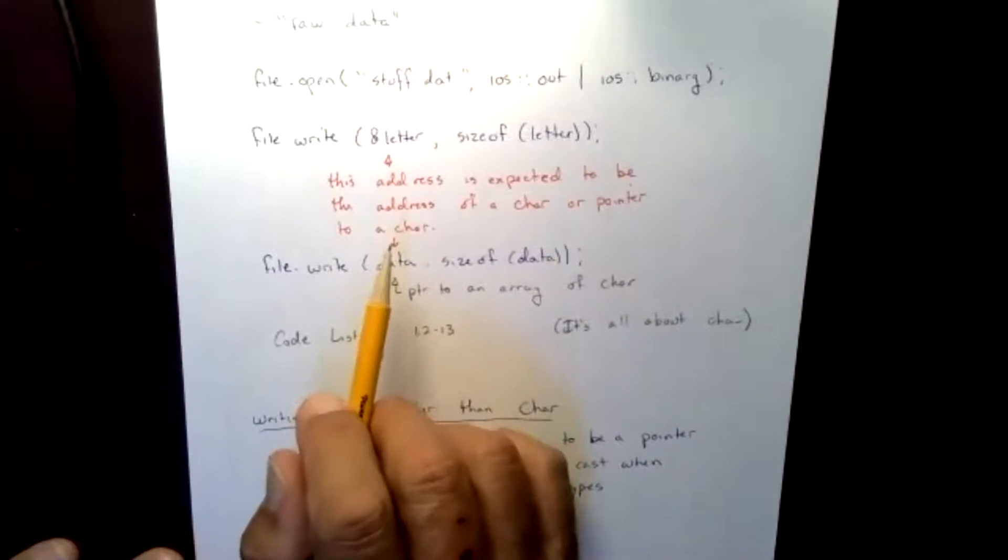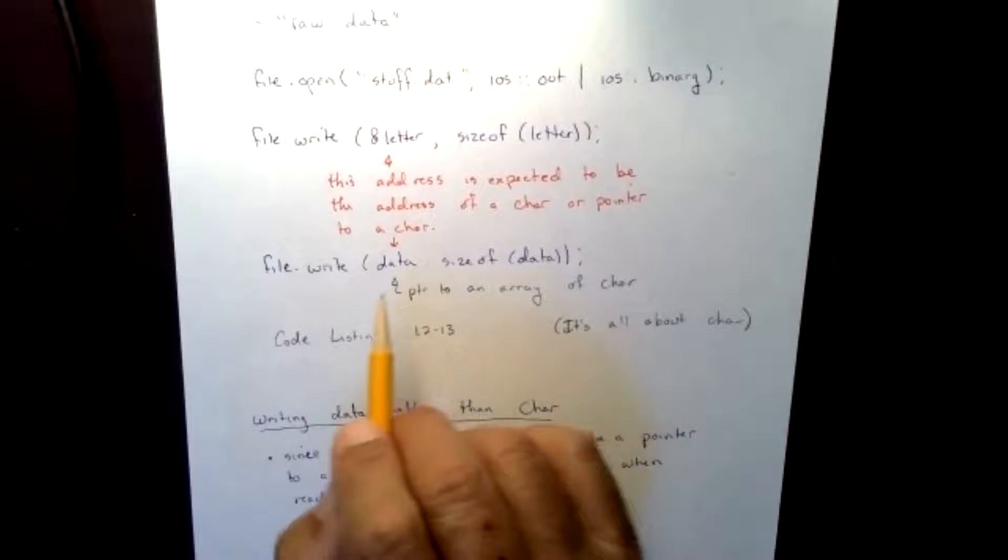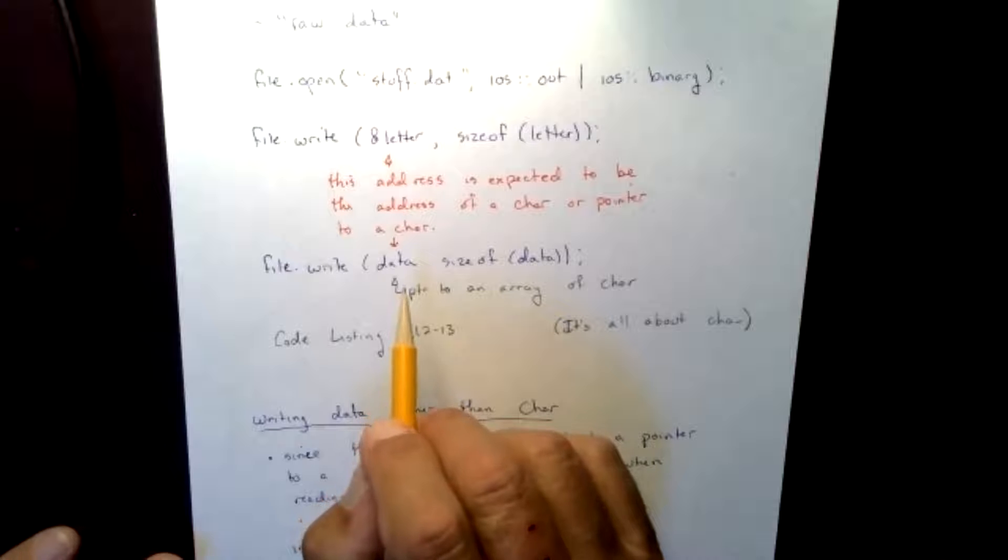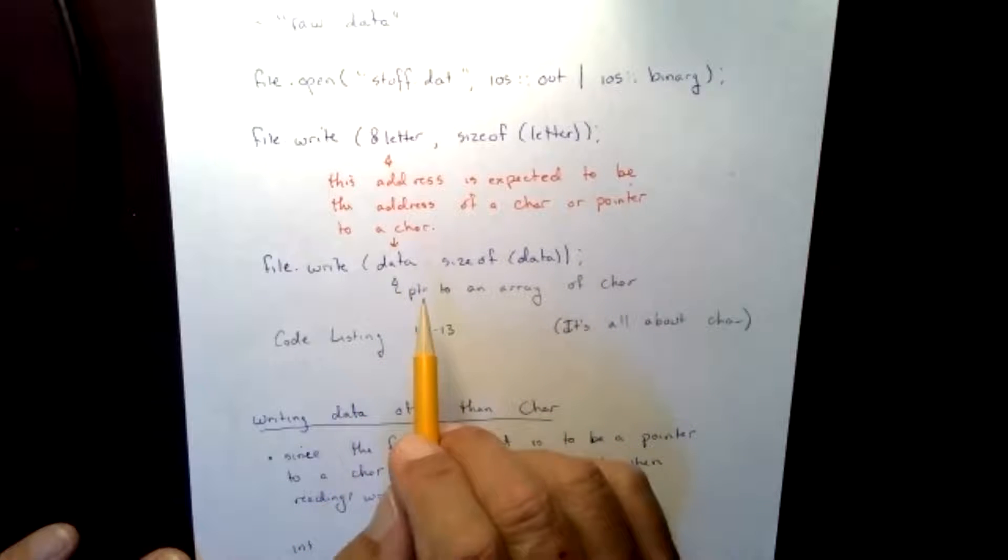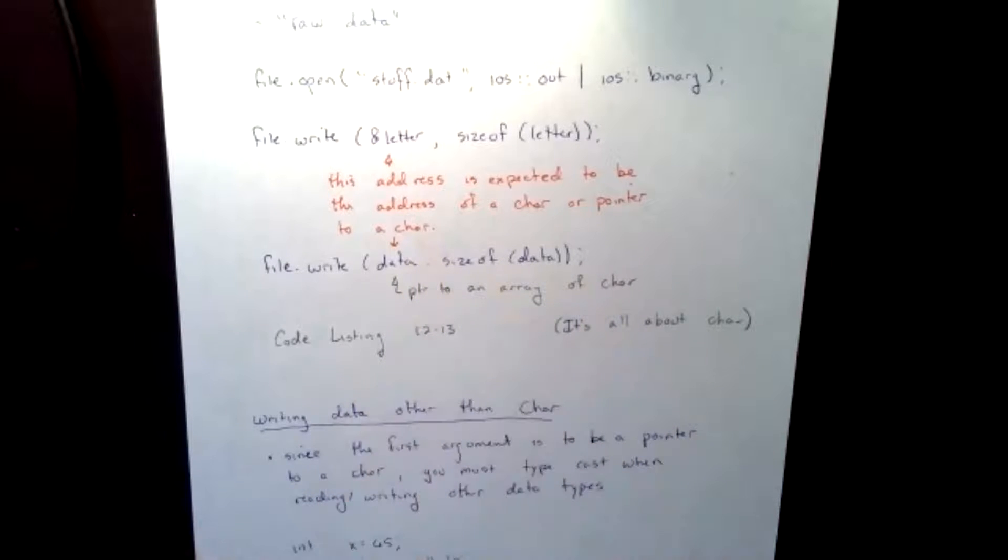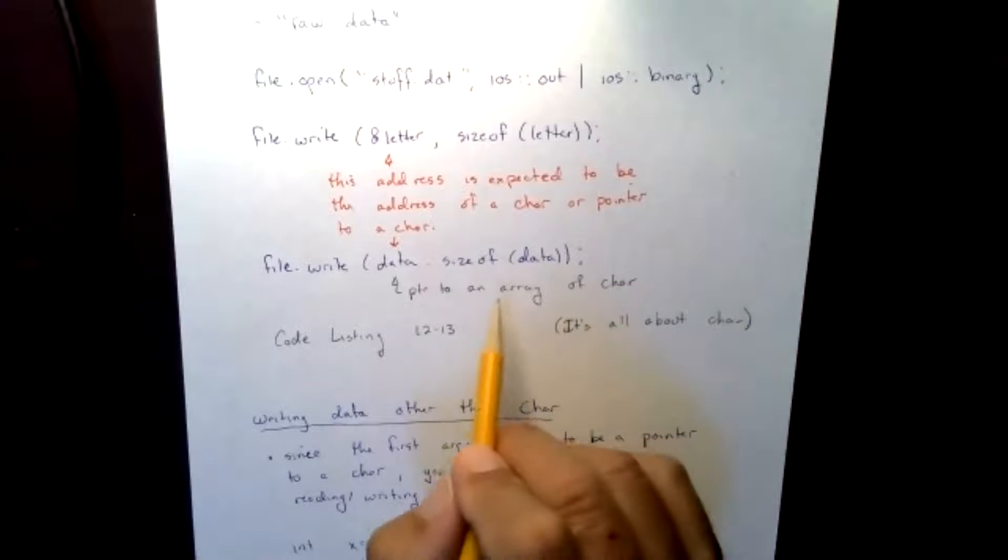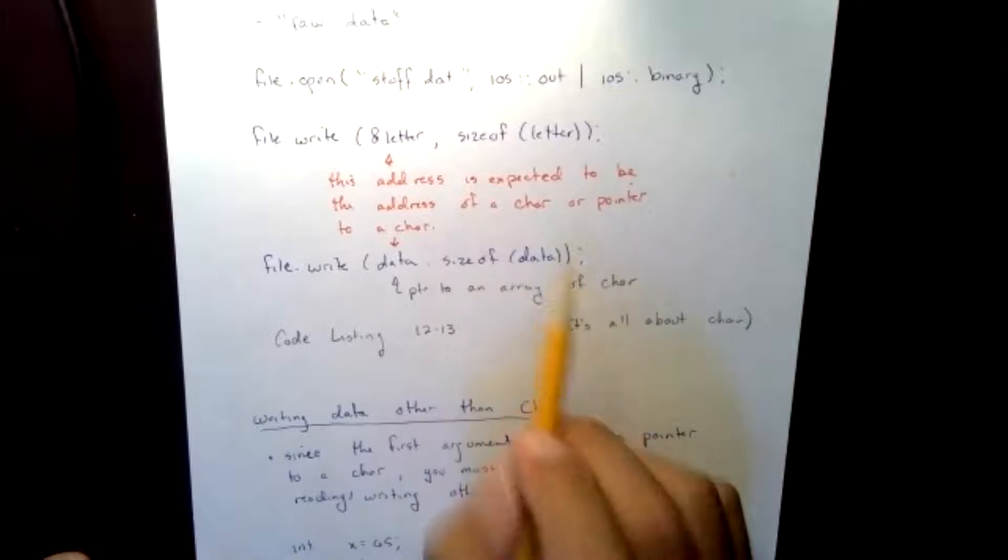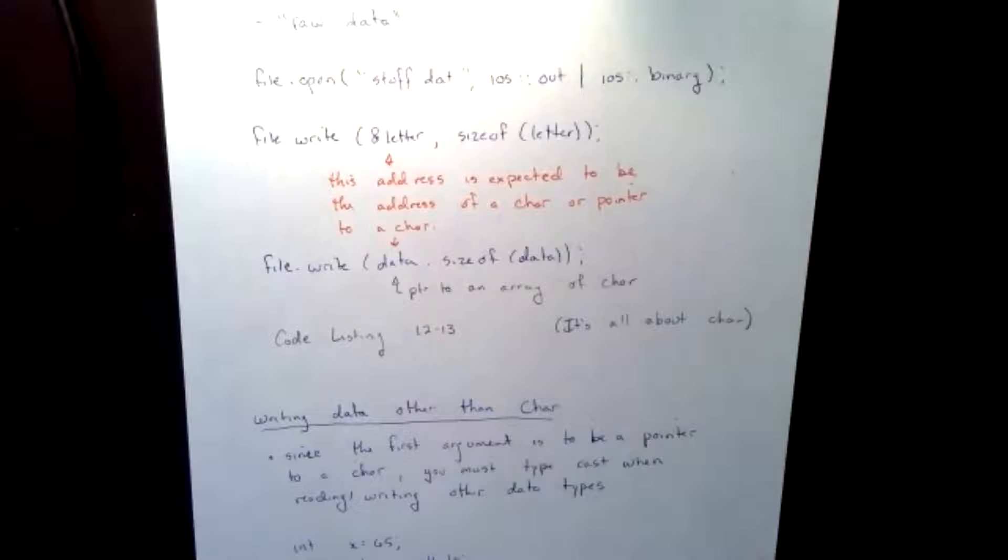What if I wrote a different example and I said file.write, and this time data, but data is actually an array of characters. So this is a pointer to the array because it's just the array name. You notice now I'm going to store the sizeof data. It's all about the char.